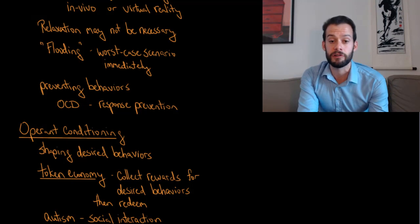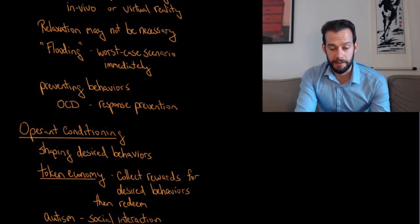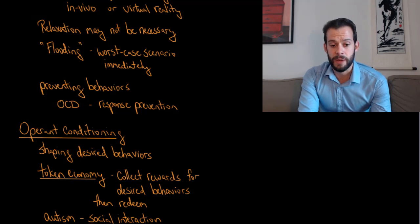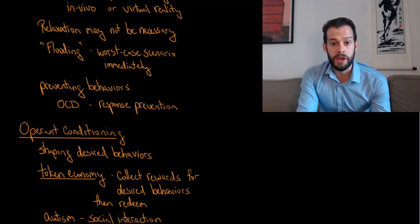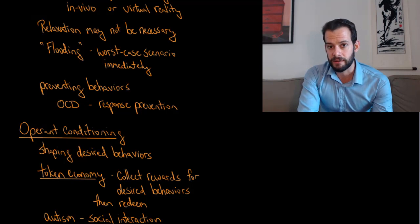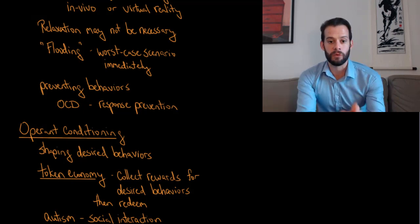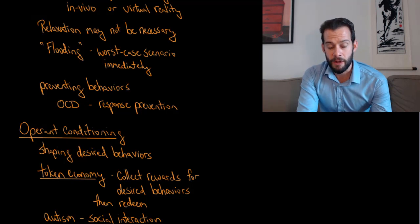Exposure therapy can also be used to prevent certain behaviors, not just unwanted emotional responses. This is used in treatments for obsessive compulsive disorder, where the person has obsessive thoughts that lead to compulsive behaviors to reduce anxiety. We expose the person to something that triggers those obsessive thoughts — for instance, if someone has obsessive thoughts about contamination and needs to wash their hands, we have them put their hands in dirt. Then we use response prevention: we don't let them wash their hands. They have to cope with the anxiety, and this can be effective for treating OCD.